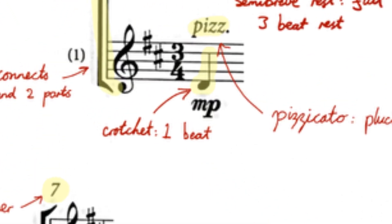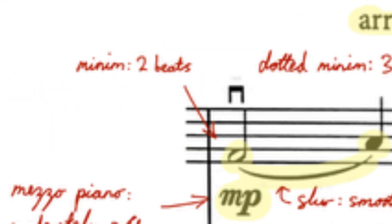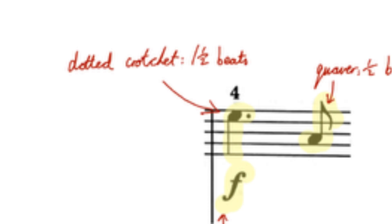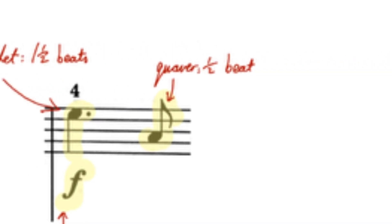Starting with notes, I won't be covering letter names in this series but we will start with note values. This piece has crotchets, which go for 1 beat, minims, which go for 2 beats, dotted minims, which go for 3 beats, dotted crotchets, which go for 1.5 beats, and quavers, which go for half a beat.